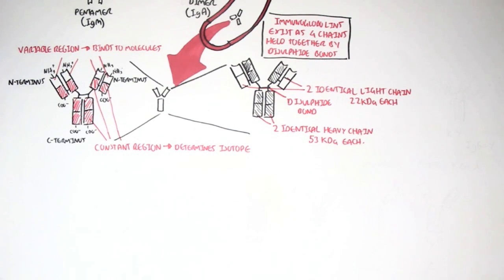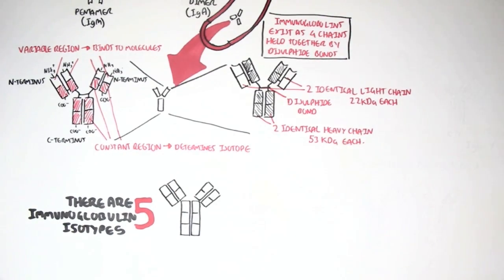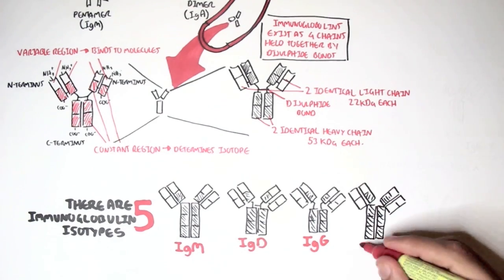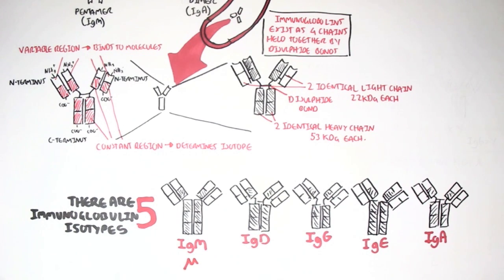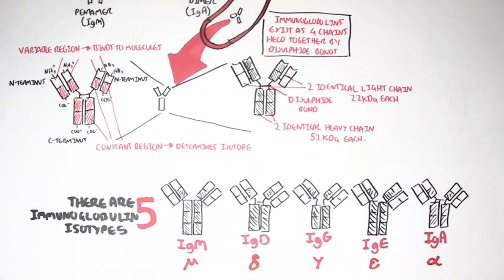There are actually five immunoglobulin classes: IgM, IgD, IgG, IgE, and IgA. They have distinct differences and can also be designated a Greek symbol based on their class — Mu for IgM, Delta for IgD, Gamma for IgG, Epsilon for IgE, and Alpha for IgA.